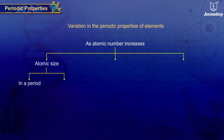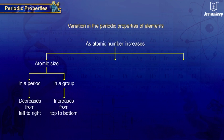the atomic size in a period decreases from left to right and increases from top to bottom in a group.